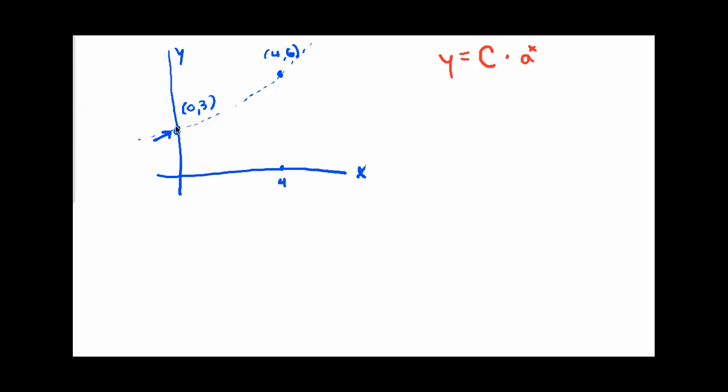If that point is on the graph of this function, then when I plug in 0 for x and get a to the 0 times C, I'm supposed to get 3 out for the y-coordinate. That's a really important point. The fact that this point (0,3) is on the graph of the function means that when I plug in this x, I get this y. So I can use my basic framework here in the red to set up this little equation here.